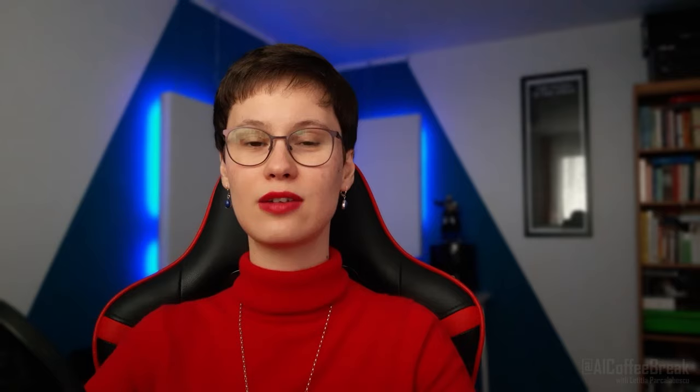So Déjà Vu works on neuron and attention level and at inference time, while MOE already applies during training and works at the coarser level of choosing between MLP variants. So this was the method, but the paper still has theoretical insights to offer.